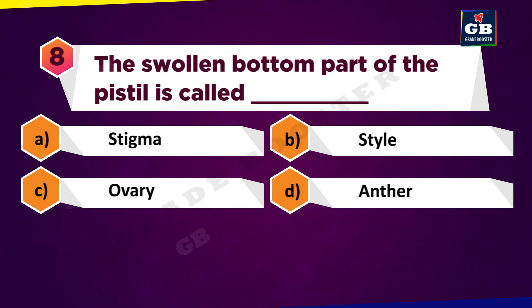The swollen bottom part of the pistil is called dash. A: Stigma. B: Style. C: Ovary. D: Anther.